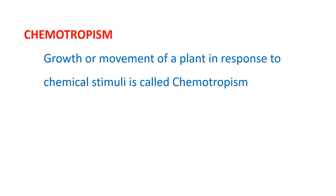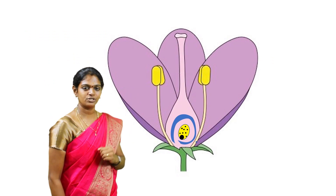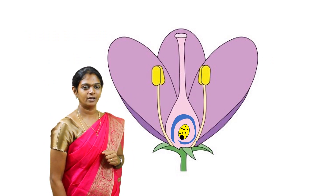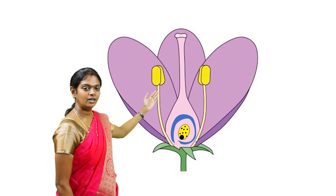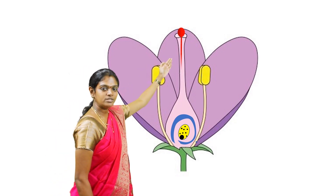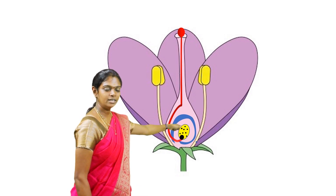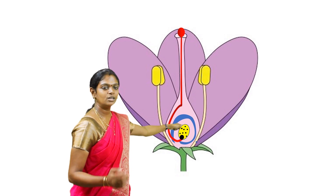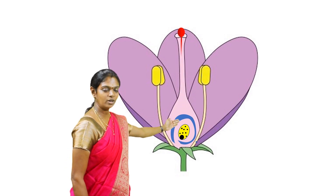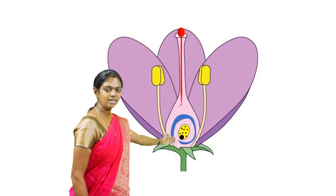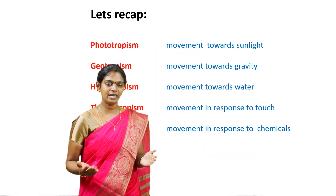Chemotropism: 'chemo' refers to chemicals. Growth or movement of a plant in response to chemical stimuli is called chemotropism. The fertilization of a plant is the best example of chemotropism. During fertilization, the pollen tube grows down the style in response to sugars in the ovary. These dots represent secreting chemicals, and the movement of the pollen tube towards the ovary is chemotropism.